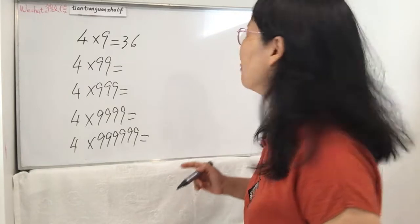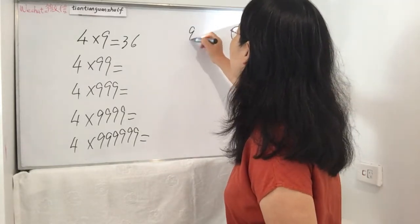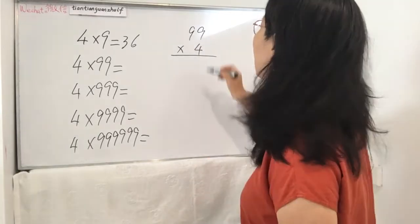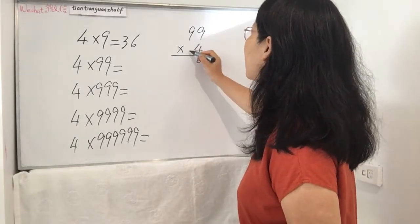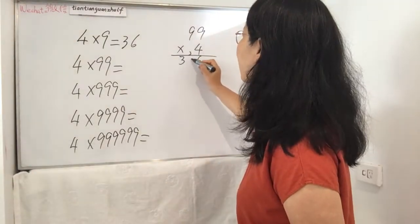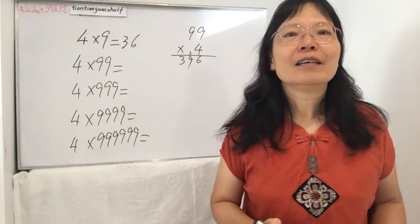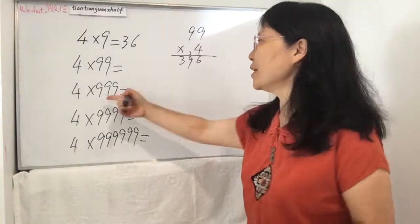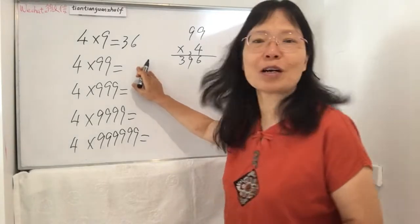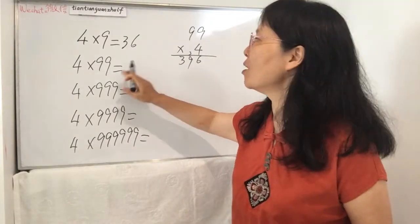Let's see. Use traditional way to work out 4 times 99. 99 times 4, traditional way we work out this way: 4 times 9 is 36, 4 times 9 again is 36, so 396. This is the traditional way. Now I'm going to show you how to work out this way very fast.